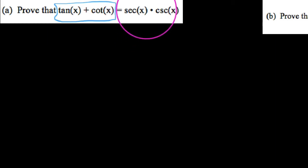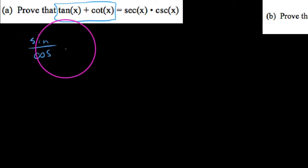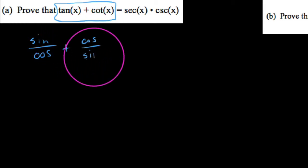We need to prove that it's the same thing as secant of x times cosecant of x. Looking at tangent of x plus cotangent of x, there's not much we can do with this directly. We could try to do some trig substitutions — if we're stuck, we can rewrite this in terms of sines and cosines. Recall that tangent is the same thing as sine over cosine, and that cotangent is the same thing as cosine over sine.